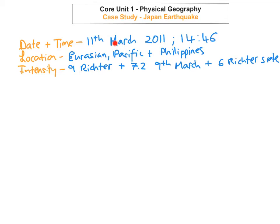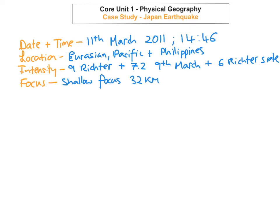Going back to the location — what actually happened was the Pacific plate, which is an oceanic plate, was being subducted underneath the Eurasian plate. There was a lot of build-up of strain and energy, and eventually the friction wasn't able to withstand anymore. The plate bounced up, and the friction was released in an earthquake and seismic waves. The focus was a shallow focus — 32 kilometres beneath the epicenter, which is really, really shallow.